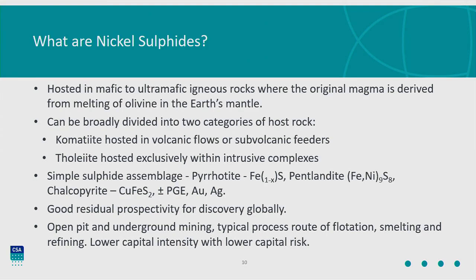The simple sulphide assemblage is pyrrhotite-dominated iron sulphide, with pentlandite exsolving from the pyrrhotite, copper chalcopyrite as a minimum, and then some deposits — if you're in that sweet spot — can develop fairly significant PGE, gold, and silver credits. So you do get very good by-product credits from nickel sulphide deposits. Globally there is very good residual prospectivity for nickel sulphide exploration, and we're seeing some of this even this week with the announcement from Legend Mining in the Albany-Fraser. The process route is flotation, smelting, and refining — a fairly well-understood, lower capital intensity route with significantly lower capital risk than laterite deposits.